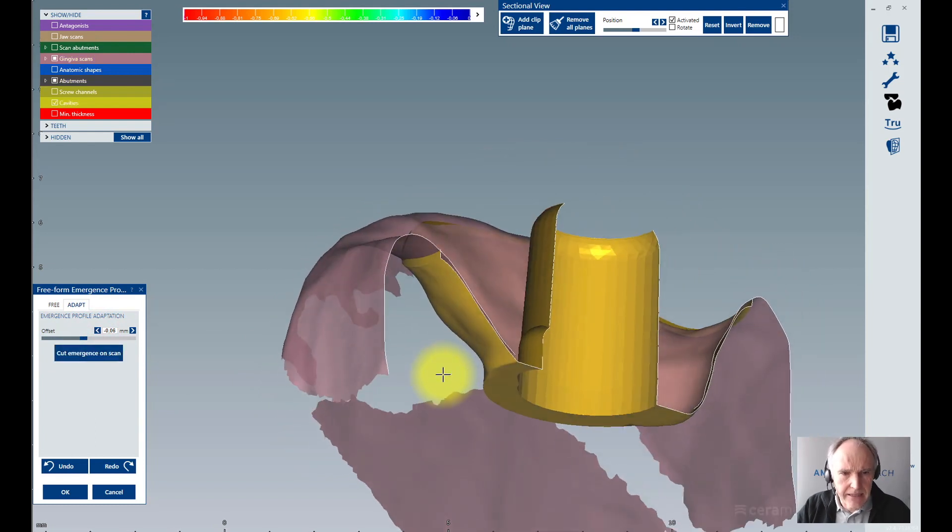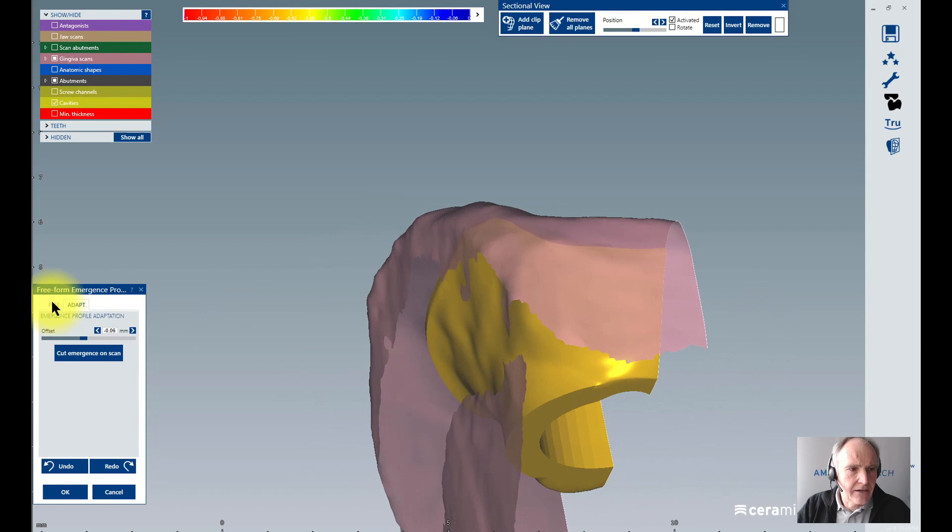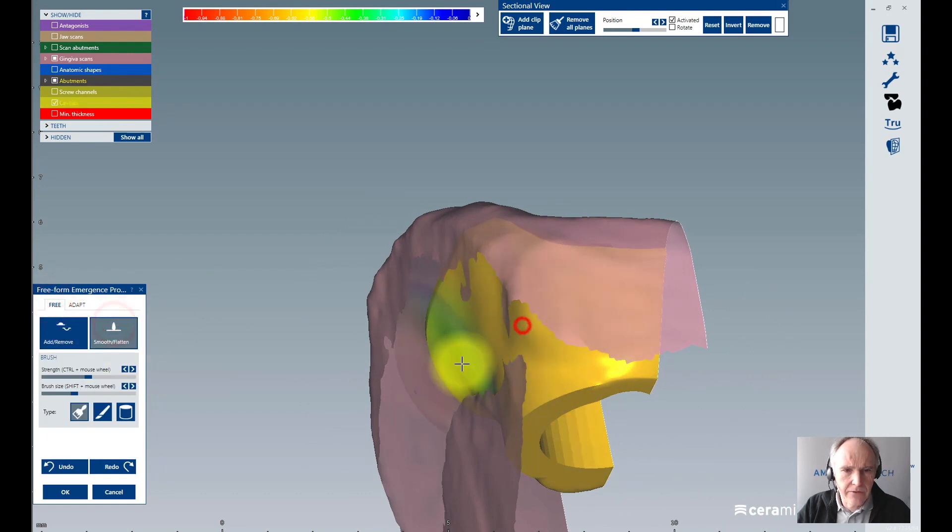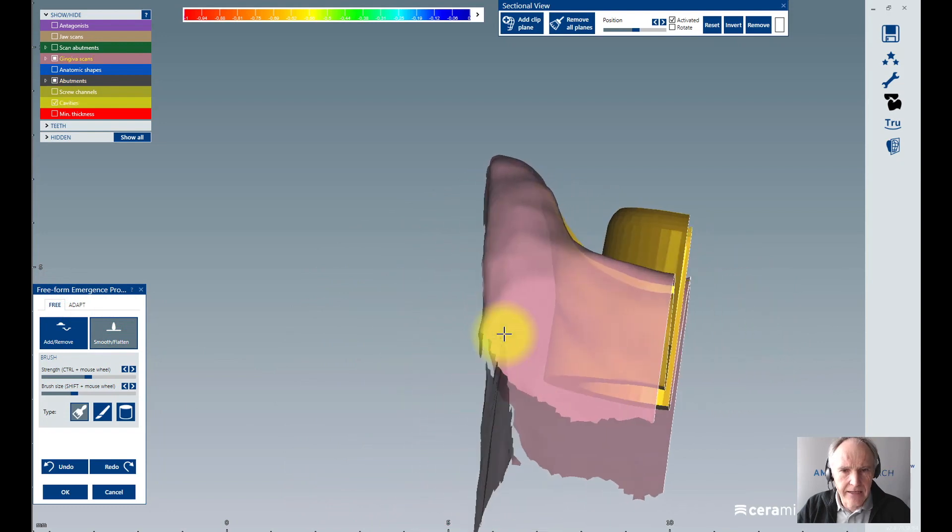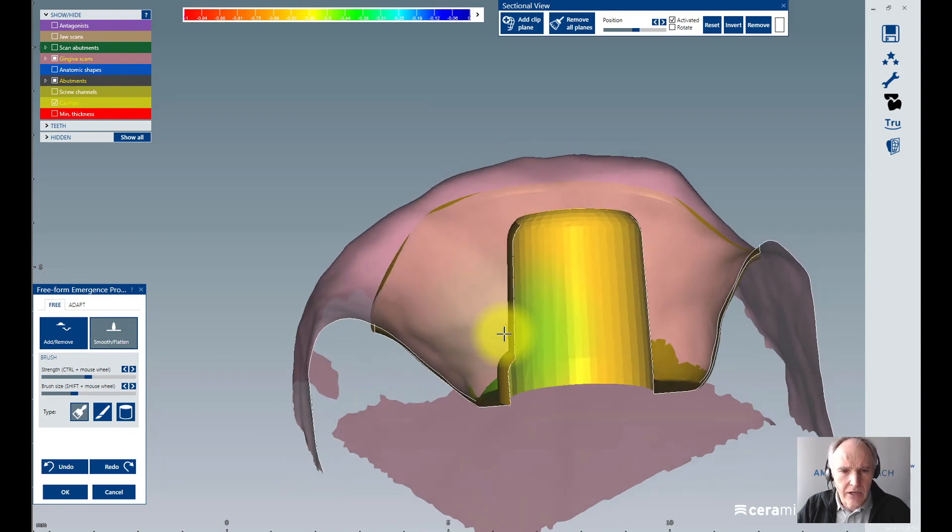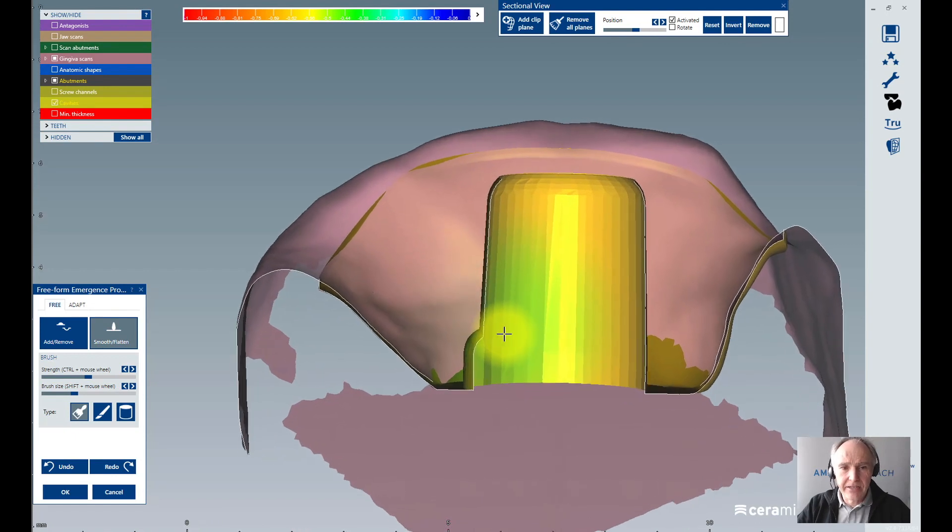After that fitting, I can go to flatten, to smooth, and to add or remove material if I feel it necessary to add more material or to remove material. That's it - the small trick to get the best fitting between your abutment and your gingiva.